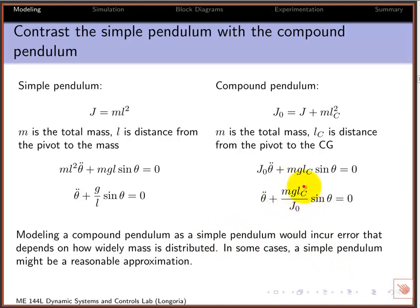You can see in some cases you might be able to approximate a compound pendulum with a simple pendulum. If ML_C over J_0 was approximately 1 over L_C, you could probably get away with not needing to know the moment of inertia. That would be an interesting study in the lab - when can you approximate a compound pendulum as a simple pendulum? It's really when you have more concentrated mass at the CG location.